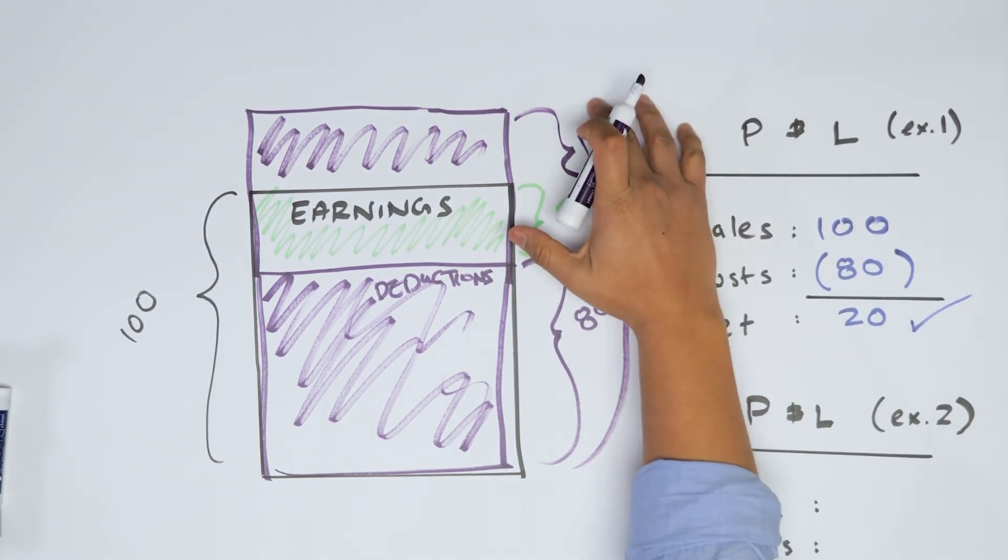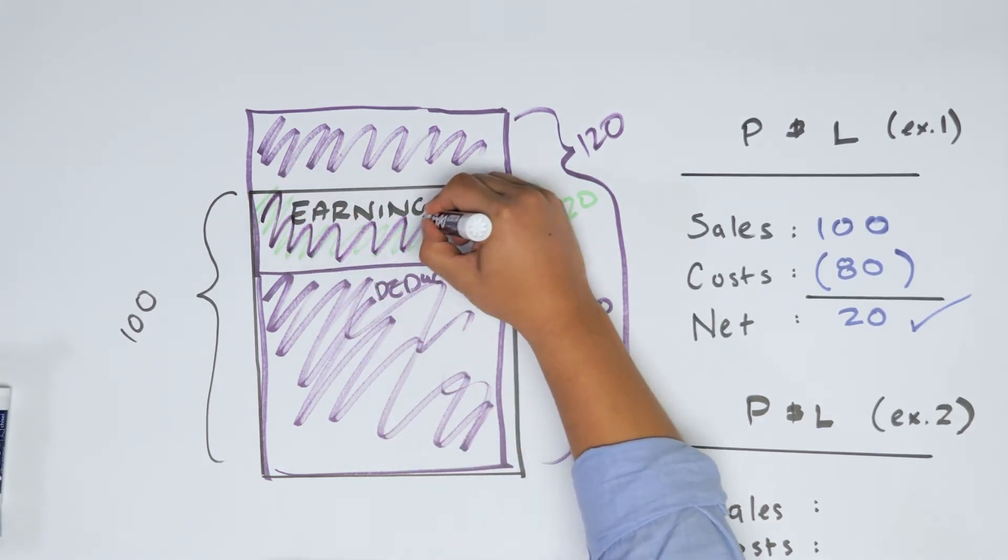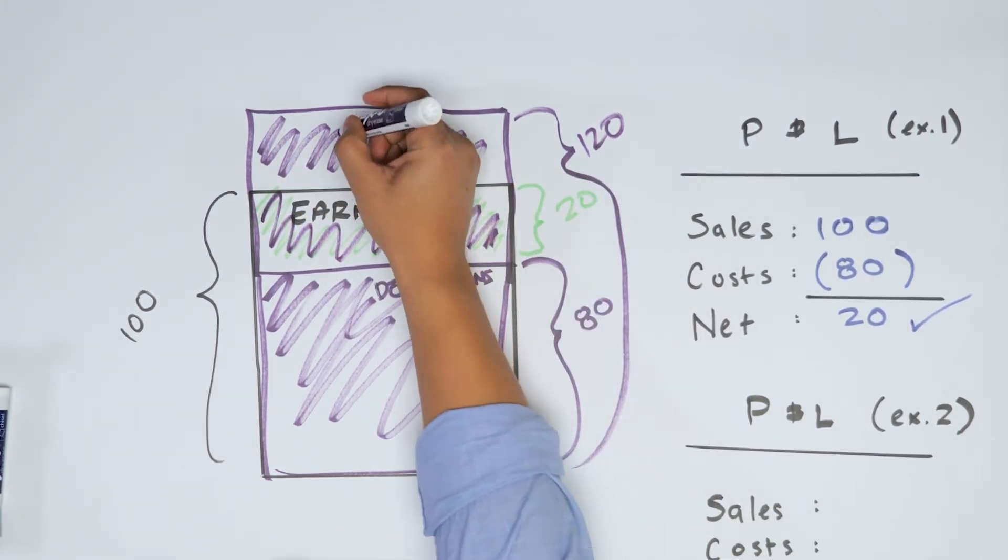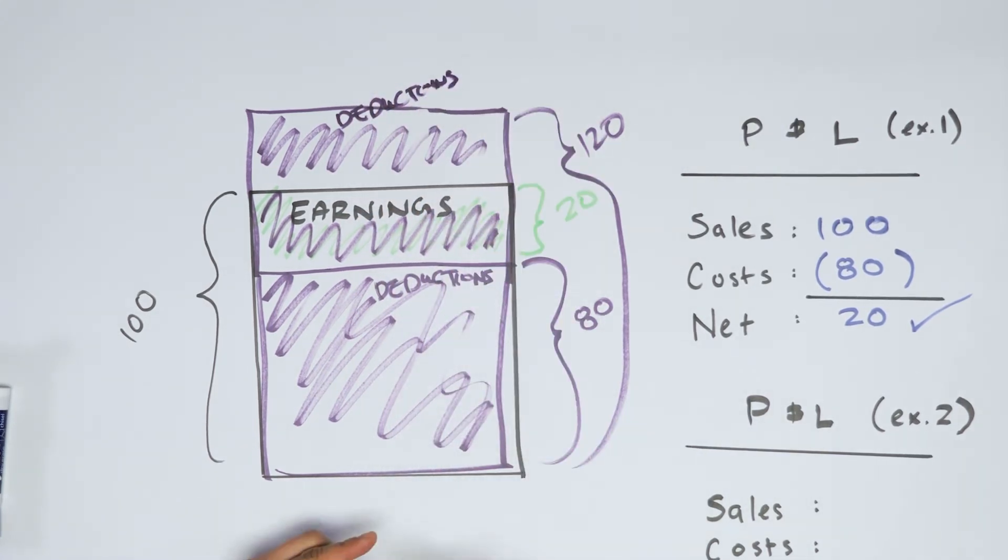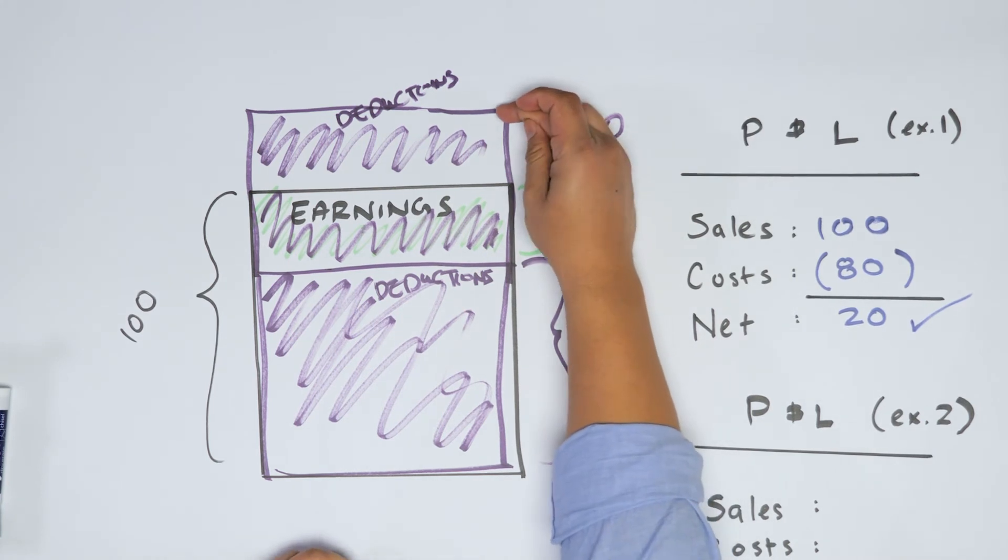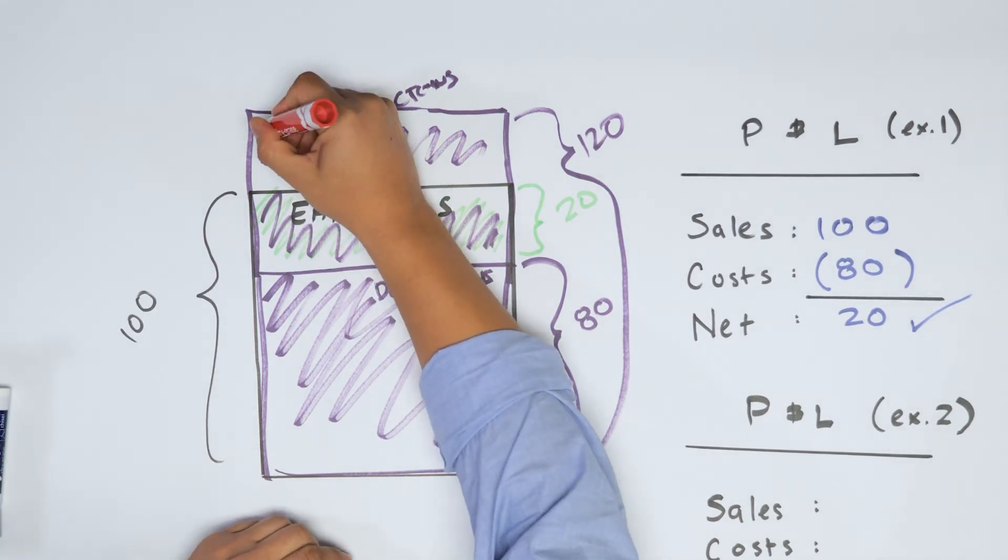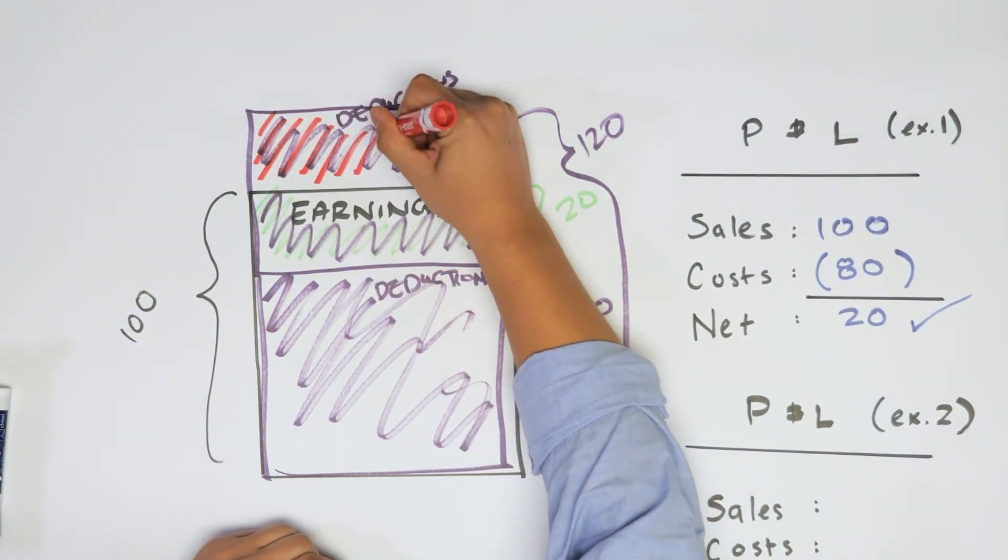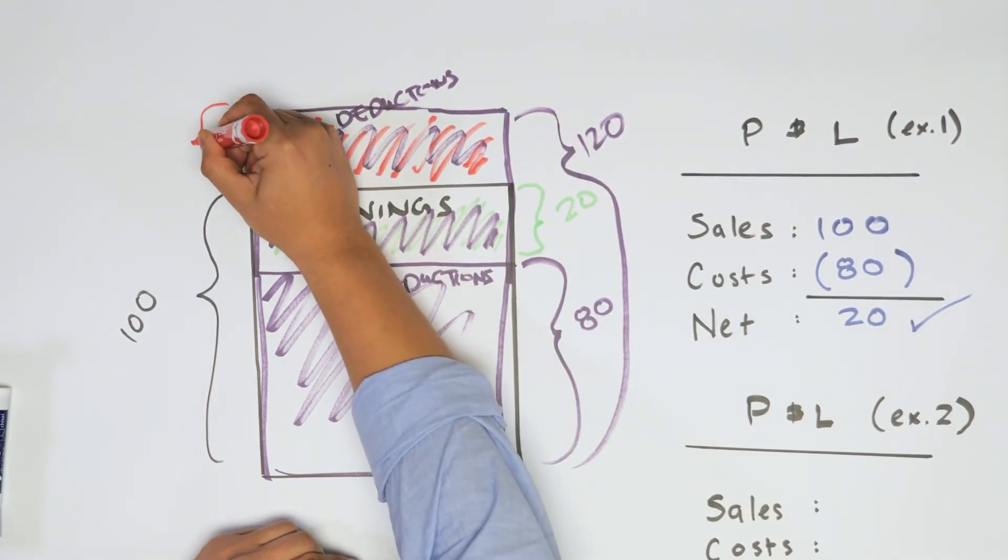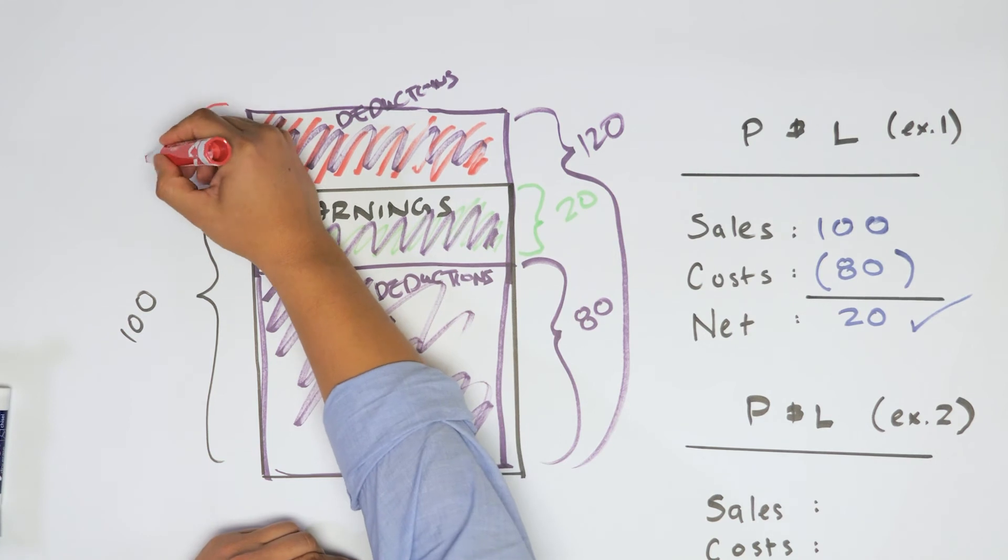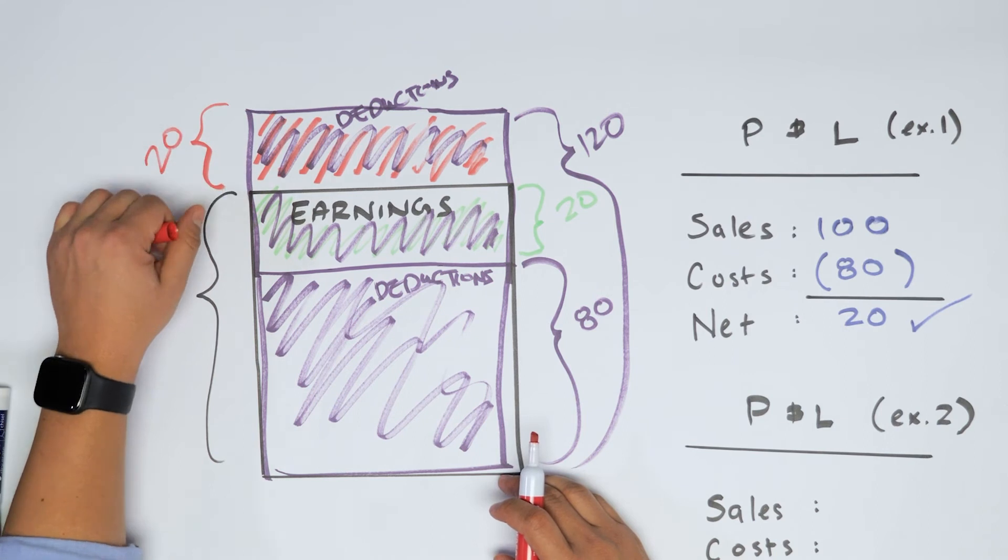So now we have a significant amount of deductions and we have less earnings. And this is all going to get eaten up by the deductions as well. So now we have deductions up here. So what happens? We still have this difference between our top line of deductions and earnings. And this is going to represent our net. So our net is still the difference between those, but in this case, it's going to be negative. So I'm going to write that out over here. Our net is going to be, I'm going to denote it as positive, but the difference in absolute terms is 20.